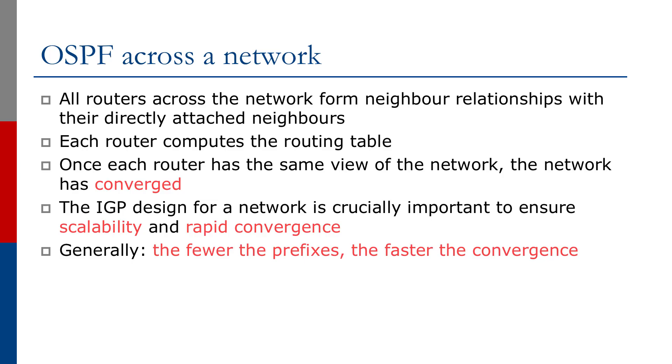All routers across the network form neighbor relationships with their directly attached neighbors, and each router computes the routing table. Once each router has the same view of the network, the network has converged. The IGP design for a network is crucially important to ensure scalability and rapid convergence. The general rule is: the fewer the prefixes, the faster the convergence. Network operators work hard to minimize the number of prefixes carried in OSPF to ensure the fastest possible convergence.